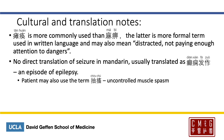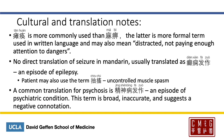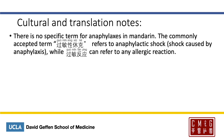The common translation for psychosis is 精神病发作 — an episode of psychiatric condition. This term is very broad and inaccurate, and sometimes has a negative connotation. Just like there are issues translating seizure, there are issues translating anaphylaxis as well. The common term is 过敏性休克, which actually means anaphylactic shock; 休克 meaning shock. On the other hand, 过敏反应 can refer to any allergic reaction, so there really isn't a true translation for anaphylaxis. You can say 严重过敏反应, or a severe allergic reaction.